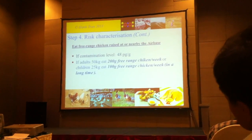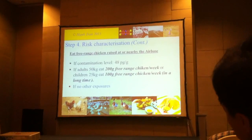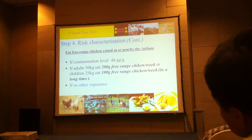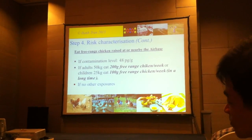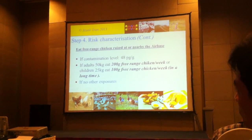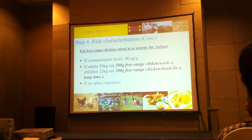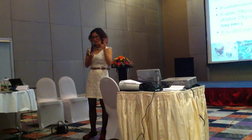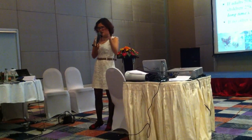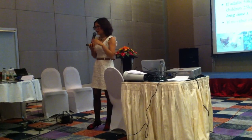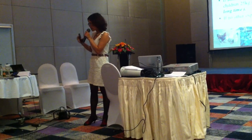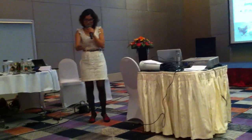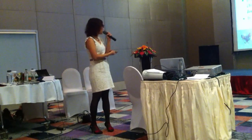Similar calculations are done for free-range chickens and fish. Very interestingly, the study shows that free-range chickens — those that run around — have very high levels of dioxin, but chickens kept in cages are okay. This is because caged chickens are not exposed to dioxin in the soil and water.